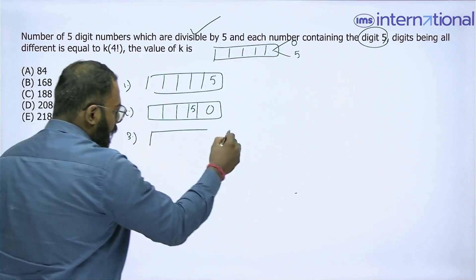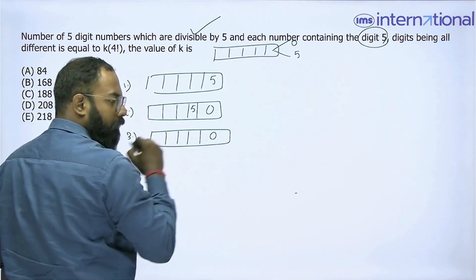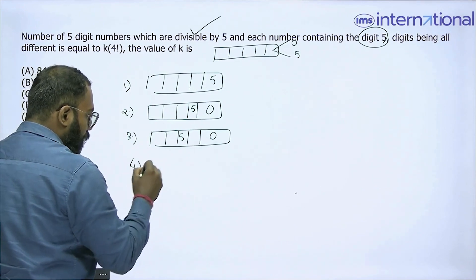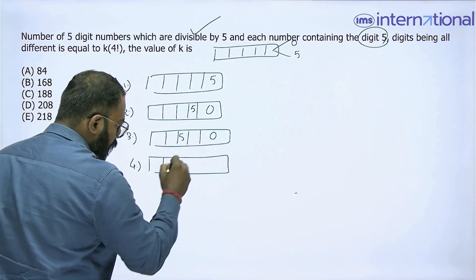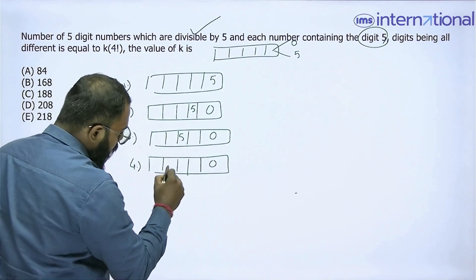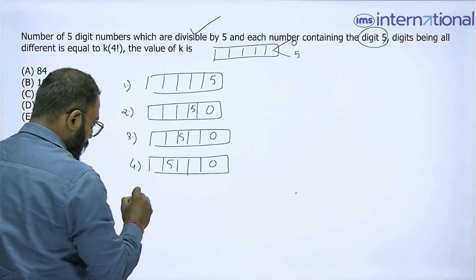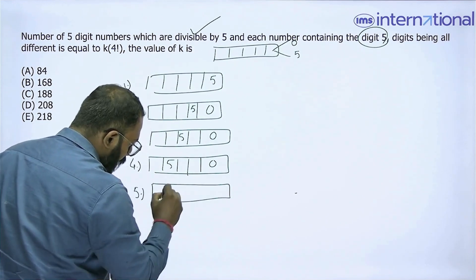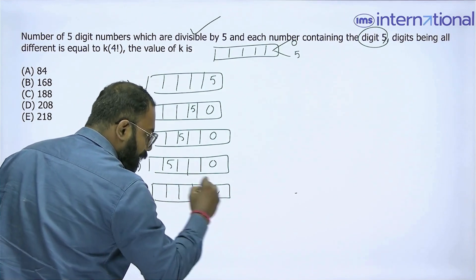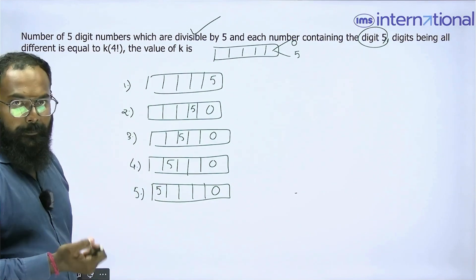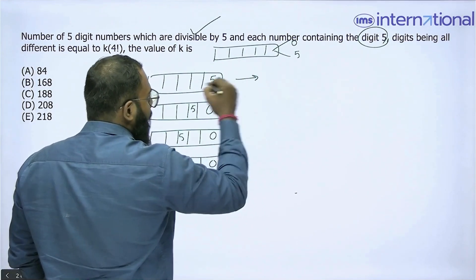The third case: the 5-digit number ends with 0 but has a 5 at its hundredth place. Fourth case: a 5-digit number that ends with 0 but has a 5 at its thousandth place. And the fifth and last case: a 5-digit number that ends with 0 and has a 5 at its ten-thousandth place.